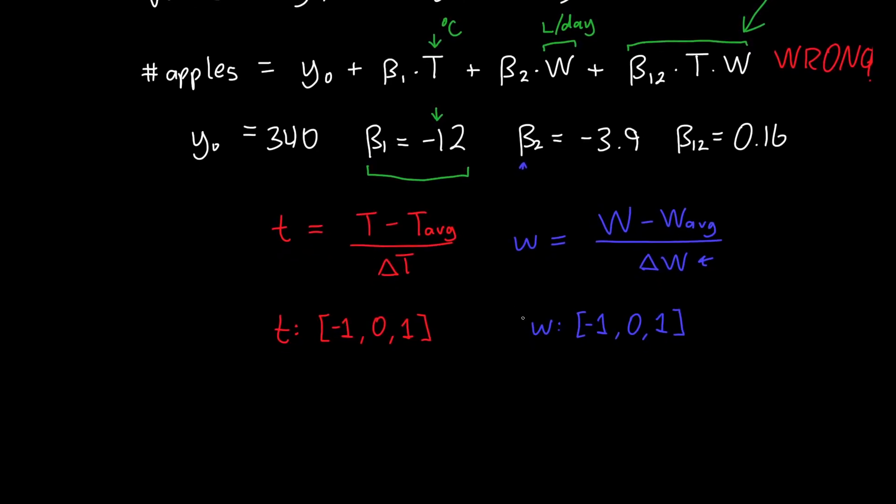So if I redo my model, I'll get that my response, so the number of apples, which I've just called y here, is equal to 50 plus, and now my actual coefficient, or my coded coefficient, is 20 times my little temperature variable, plus 5 times my little water variable, plus 40 times little temperature times little water.